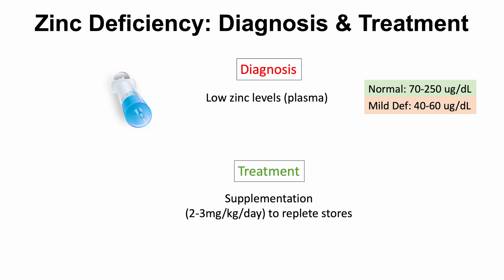Because treatment addresses the cause of deficiency, if there is increased utilization due to pregnancy or lactation, higher doses may be used. While the standard RDA is 8 to 11 milligrams per day, in cases like lactation it can be increased to 11 to 12 milligrams per day.